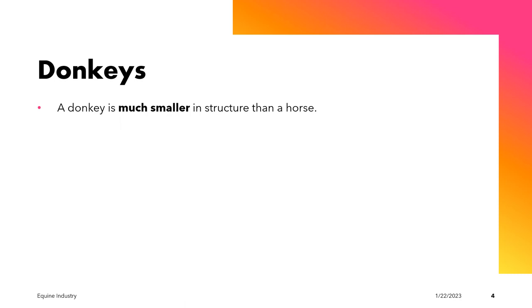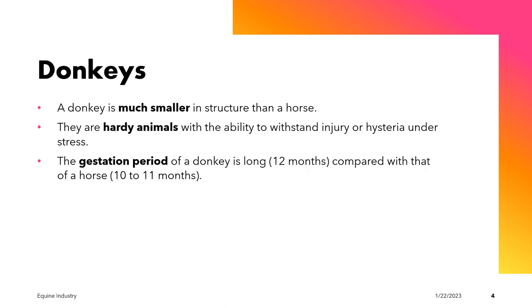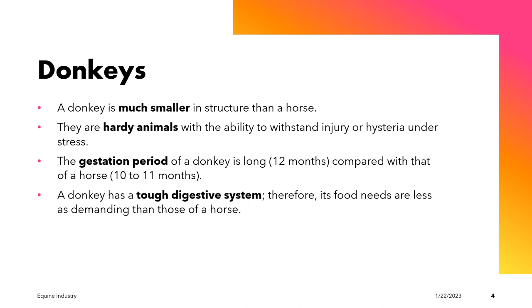What are donkeys and how do we differentiate them from horses, which is our baseline of comparison? A donkey, in terms of its size, is much smaller in structure than a horse. They are considered to be hardy animals, meaning they are resilient and have the ability to withstand injury or stress. In terms of reproductive parameters, donkeys have a longer gestation period compared to horses. In terms of the digestive system, a donkey has a tougher digestive system, so its food needs are considered to be less demanding than that of the horse.